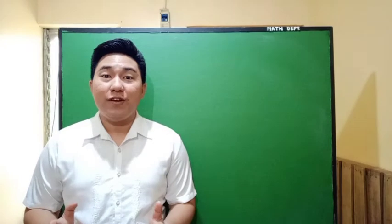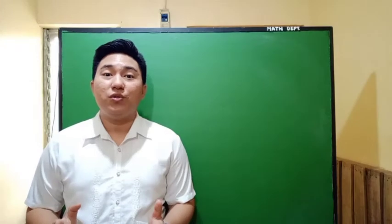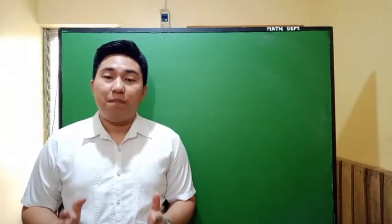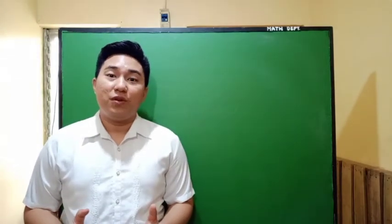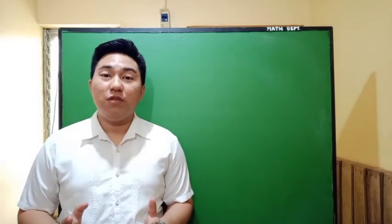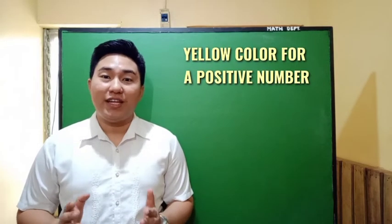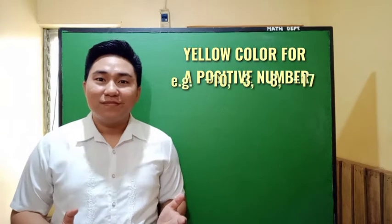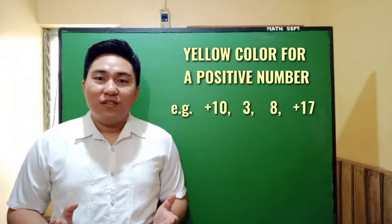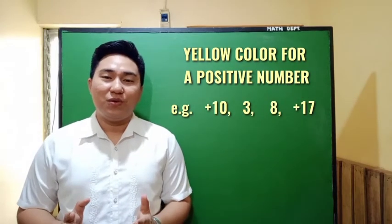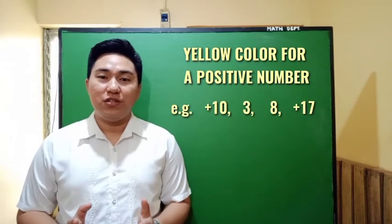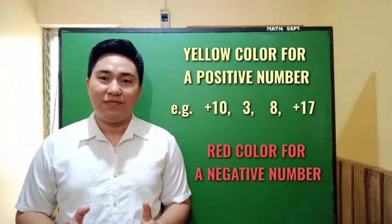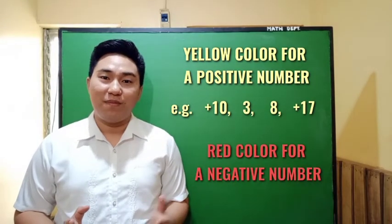In here, we will be using two colors to represent a number. For a positive number or positive integer, we will be using a yellow colored number. For a negative number or negative integer, we will be using a red colored number.